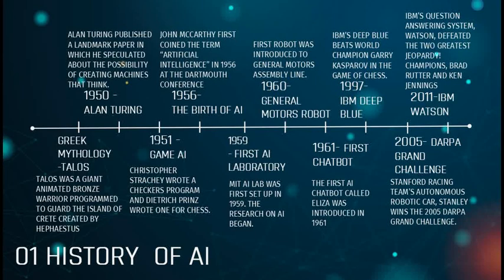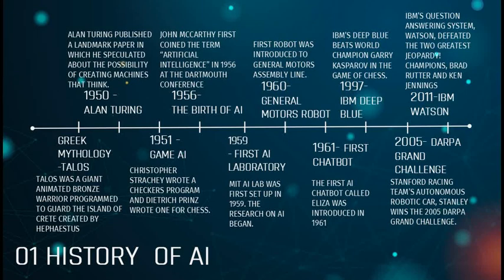Alan Turing proposed the Turing Test, which tests whether a computer can think like a human being. In 1951, there were inventions related to game intelligence — this period is called Game AI, as many computer scientists worked on a checkers program and programs for chess. In 1956, one of the most important years for AI, John McCarthy first coined the term AI at the Dartmouth Conference. This was followed by the first AI laboratory being set up.